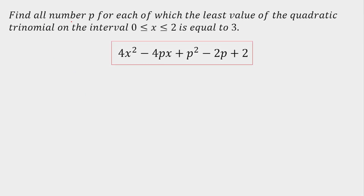In today's lecture, I'm going to solve a question from quadratic equations. The question is: find all numbers P for which the least value of the quadratic polynomial in the interval 0 to 2 is equal to 3. So, our least value of this quadratic equation should lie in the interval 0 to 2 and the value should be equal to 3.